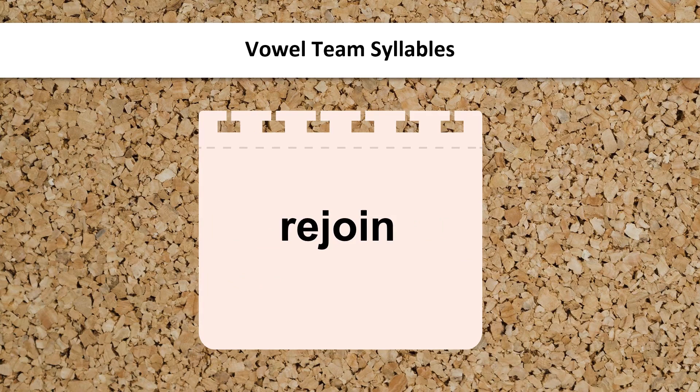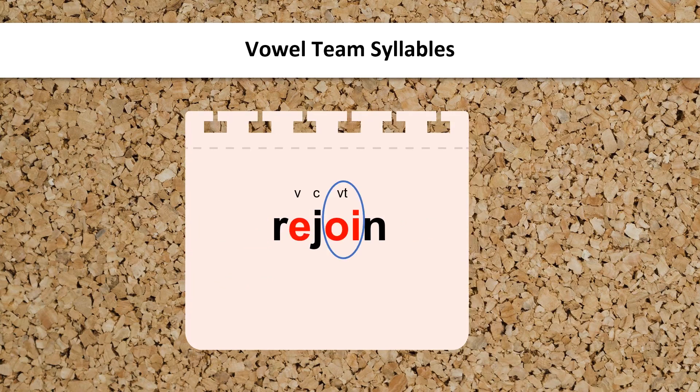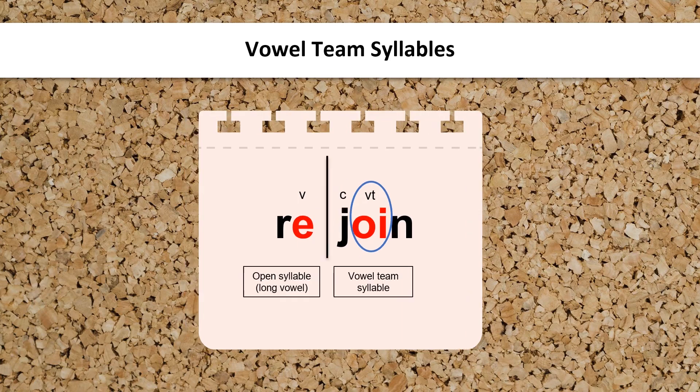How would you help students decode this word? Code the vowels and any consonants between the vowels. Notice the vowel team in this word. Divide the syllables. If there is one consonant between two vowels, the consonant usually goes with the second syllable. Now decode each syllable. Re, join, rejoin.